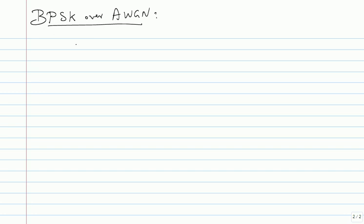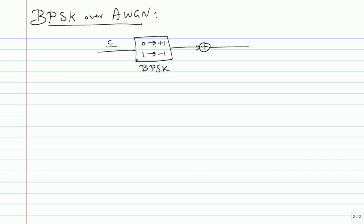How does BPSK over AWGN work? If you are given a code word, you do the modulation — this is the BPSK step — and then you have AWGN, so a noise vector gets added and you get a received vector R. The decoder has to work with R. If you make a hard decision for each received value independently, you go back to the BSC. I am going to work with the entire received vector R, which is now a real-valued vector.